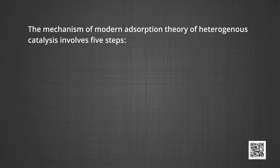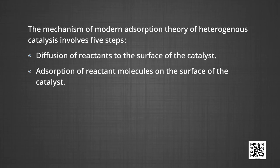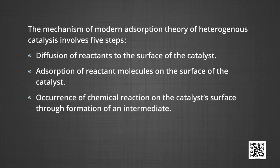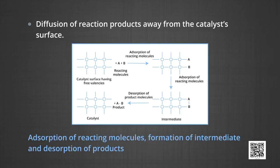The mechanism involves five steps. Number one: diffusion of reactants to the surface of the catalyst. Number two: adsorption of reactant molecules on the surface of the catalyst. Number three: occurrence of chemical reaction on the catalyst surface through formation of an intermediate. Number four: desorption of reaction products from the catalyst surface, thereby making the surface available again for more reaction to occur. Number five: diffusion of reaction products away from the catalyst surface.